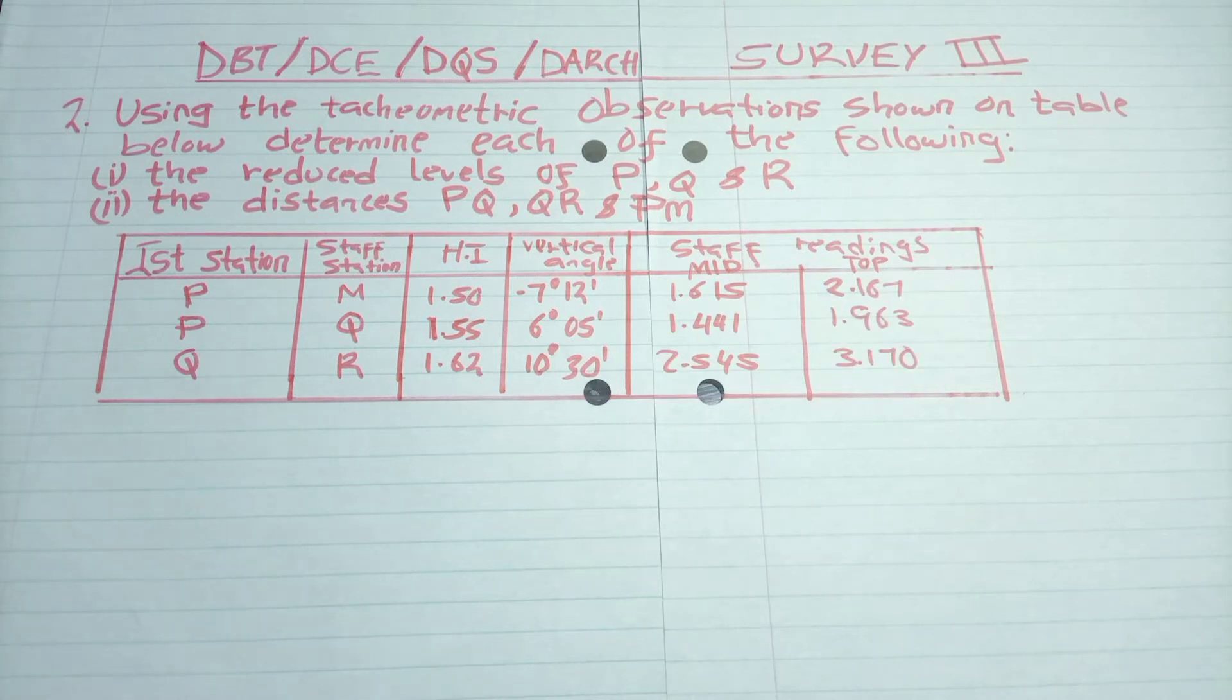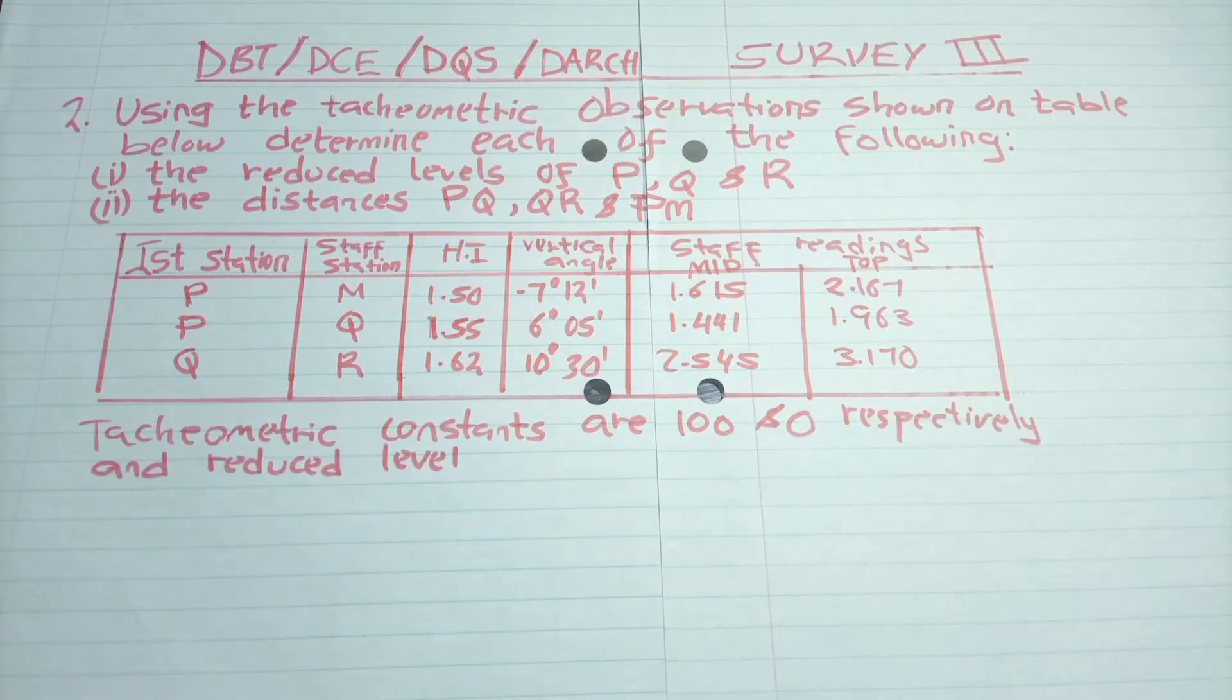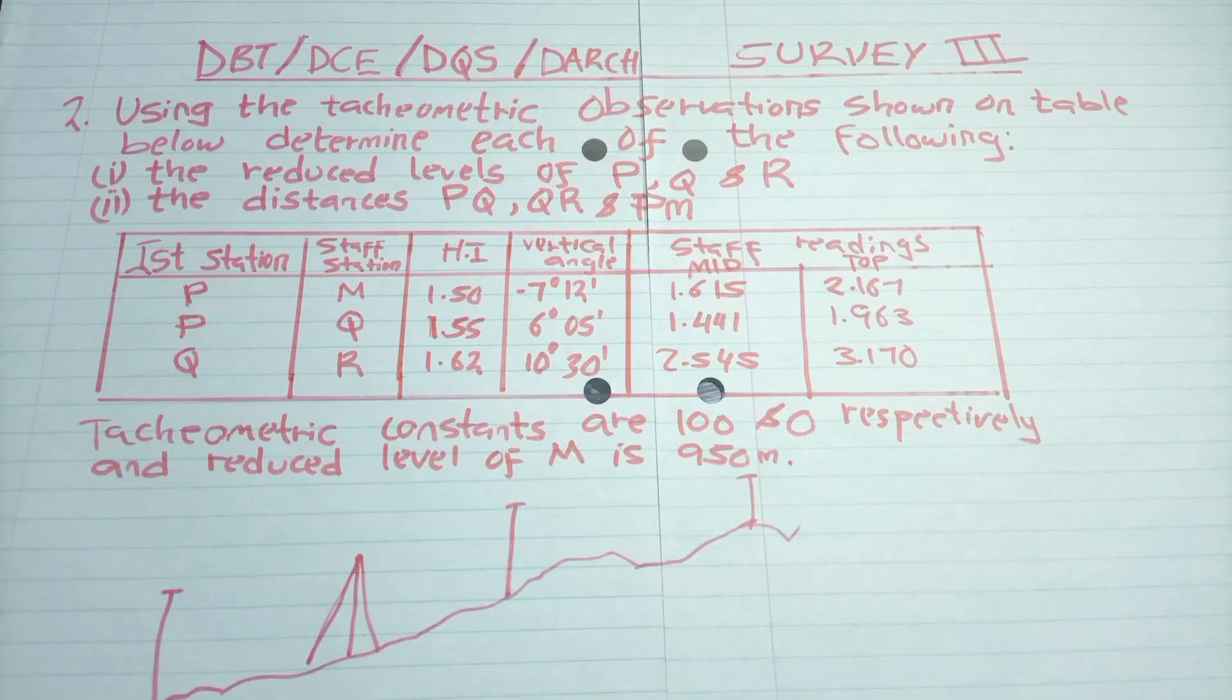Then you have the staff reading for only the mid and the top. Then the tachometry constants are 100 and 0, respectively. And the reduced level of M is 950 meters.